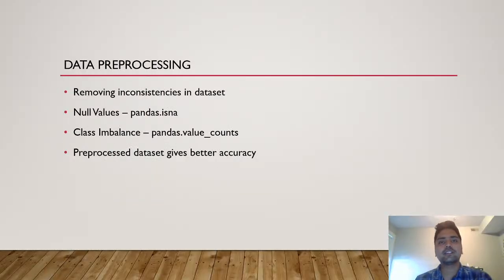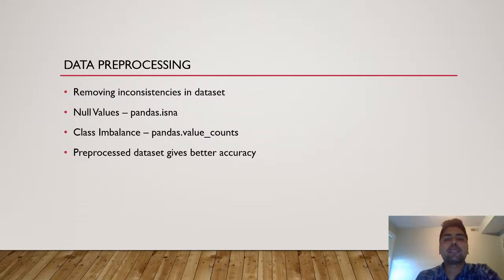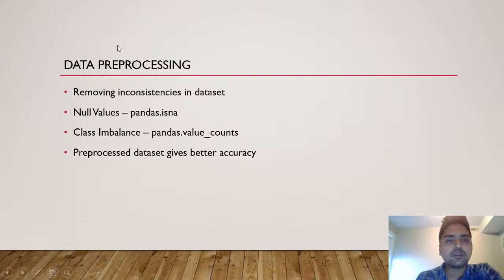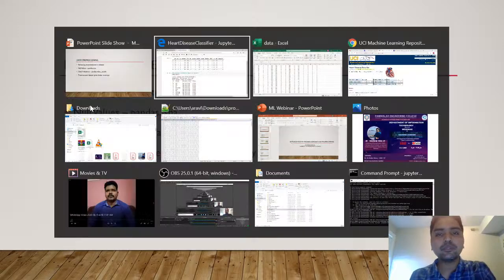The next step in any machine learning project is data preprocessing. There will definitely be some inconsistency in any dataset — just like null values or class imbalance. Even datasets from the UCI Machine Learning Repository will have some null values, but we still need to preprocess. Let me show from a programming perspective how to deal with null values. We have the data in a data frame inside the 'data' variable. To check for null values, use the is_null function of pandas followed by sum — this gives the count of null value records per field.